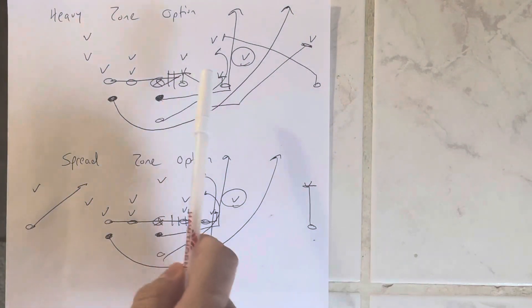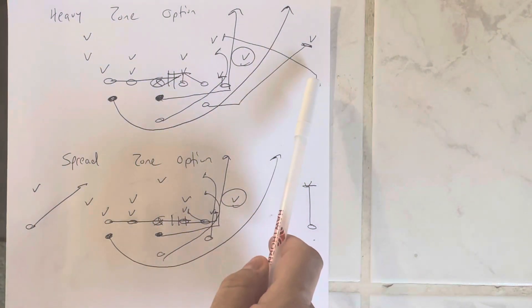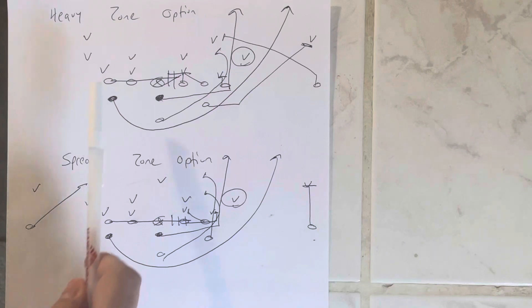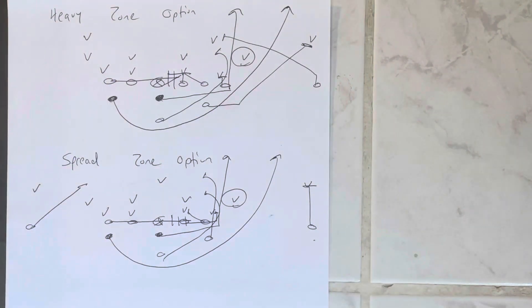So heavy is when you bring the tackle over, you put the receiver out. Why do you put the receiver as the backside tackle? Why is this better?